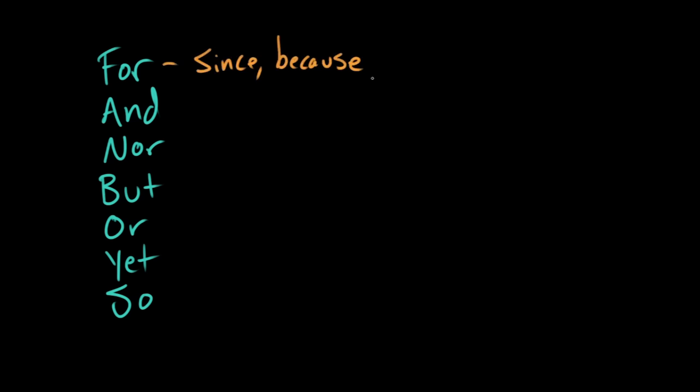For has this connotation. You can use it the way you would use a word like since or because. As in, I do not eat buttons, for they are not food. You can see I'm combining these two little sentences using the word for. We're using this for to explain my reasoning. I do not eat buttons because they are not food. And for is a simpler way to express that.